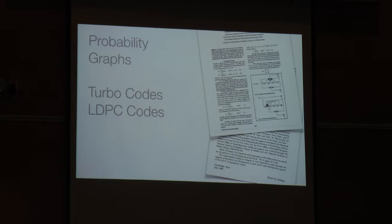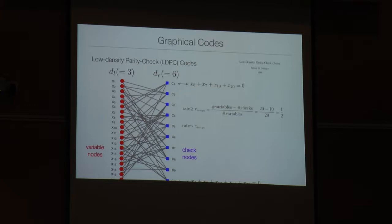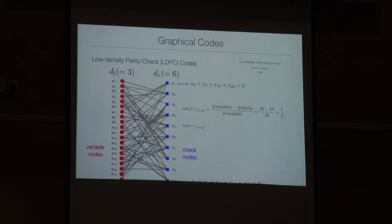The next idea — the one in any cell phone, storage disk, and Wi-Fi transmission today — goes back to Gallager in the 1960s, was then largely forgotten, and was restarted in 1993 by Berrou, Glavieux, and Thitimajshima. Now we forget about minimum distance entirely and instead start with an algorithm, then design codes so that they work well for that algorithm. These are called low-density parity-check codes and turbo codes, among many flavors, but the basic idea is the same.